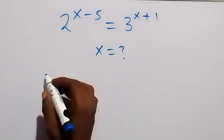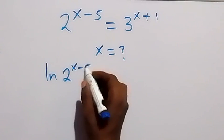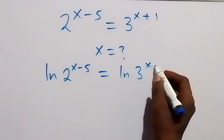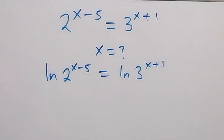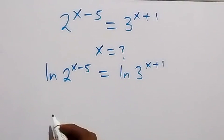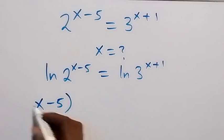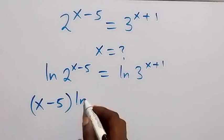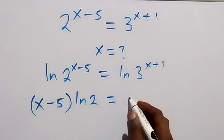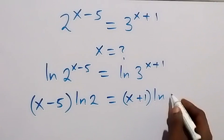We can take the ln on both sides. We have ln of 2 raised to power x minus 5 equals to ln of 3 raised to power x plus 1. We can take this power to the back from the law of logarithms, and this will be x minus 5 multiplied by ln 2 equals to x plus 1 multiplied by ln 3.